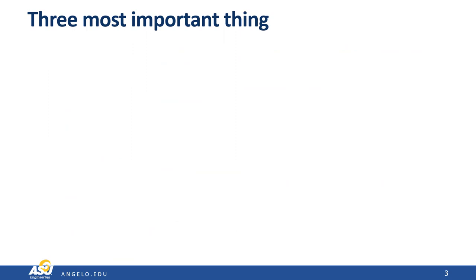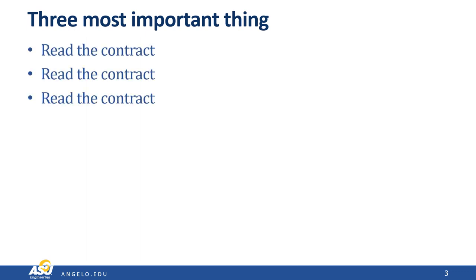I want to first give you the three most important things to know about contracts and analyzing terms and conditions. This is very similar to the three most important things in real estate. The three most important things are to read the contract, read the contract, and read the contract. I cannot overemphasize this. The worst contractual problems I've ever had came because a contract was signed and one of the parties didn't really read what was there. That's a surefire way to lose your job — sign a contract you didn't read and then have it go south.